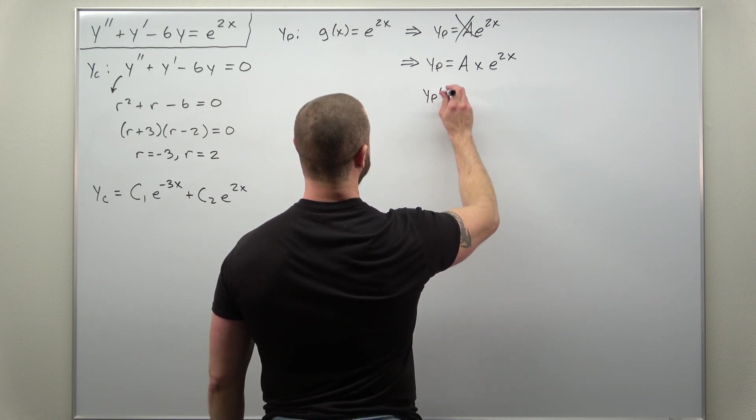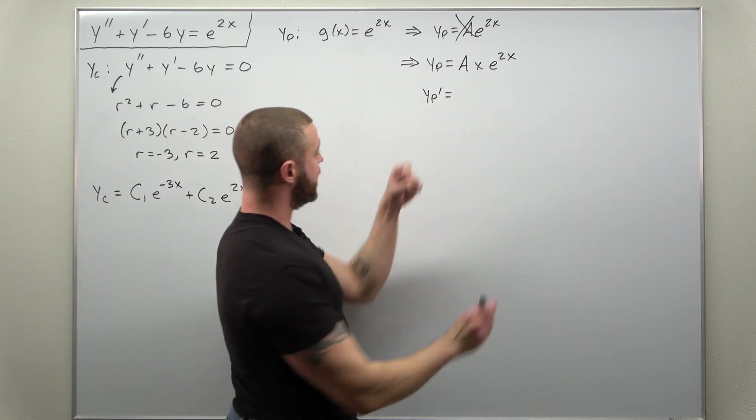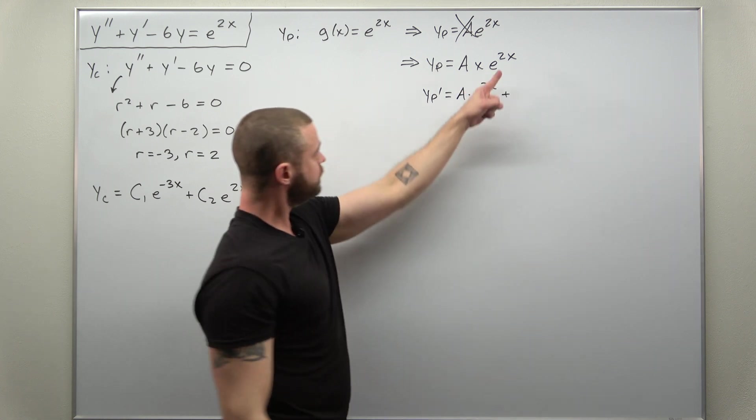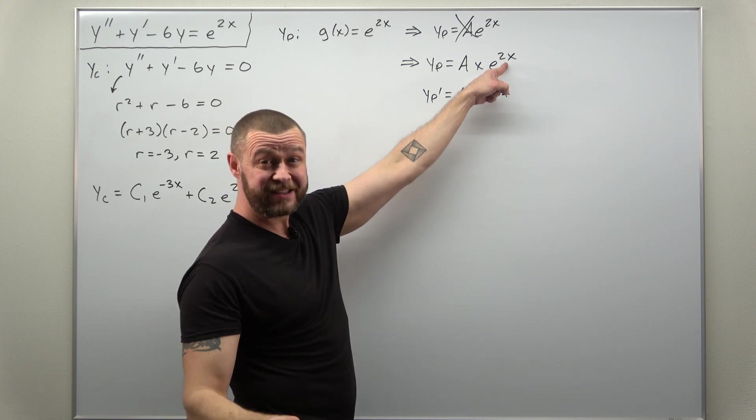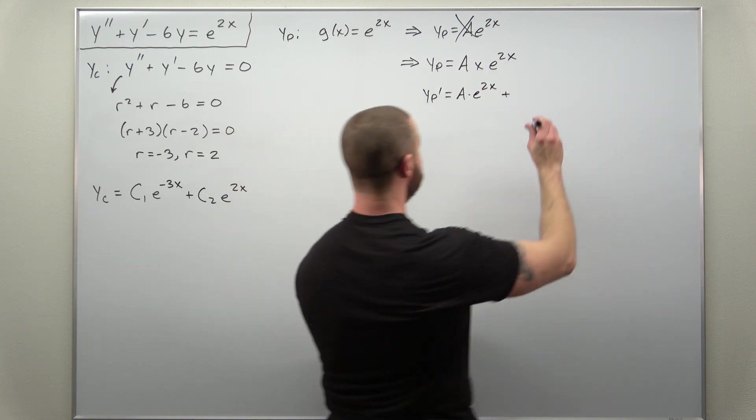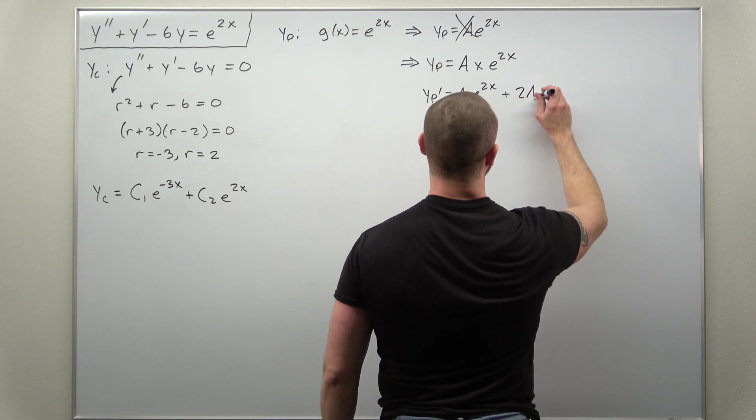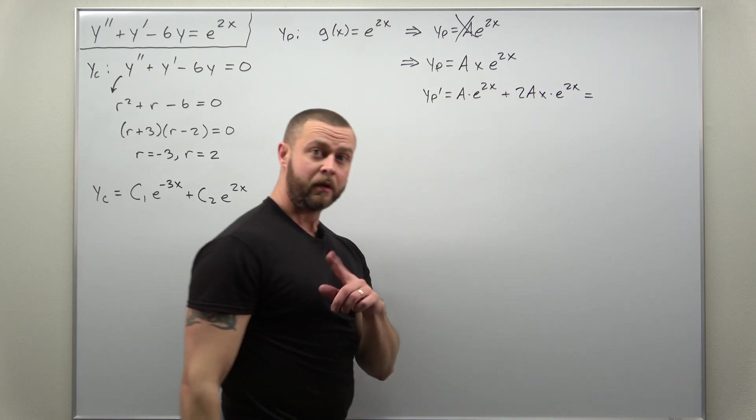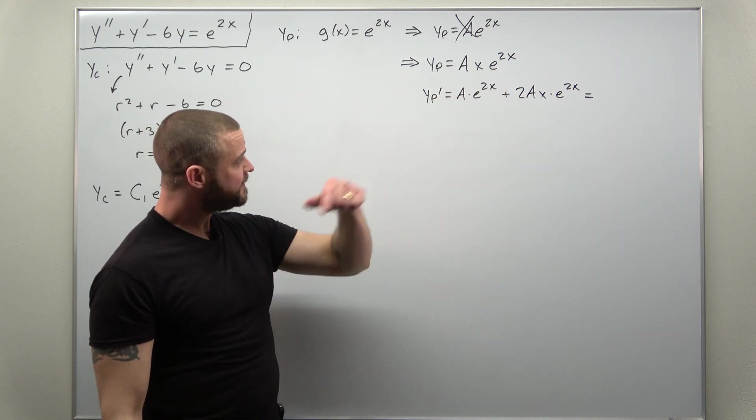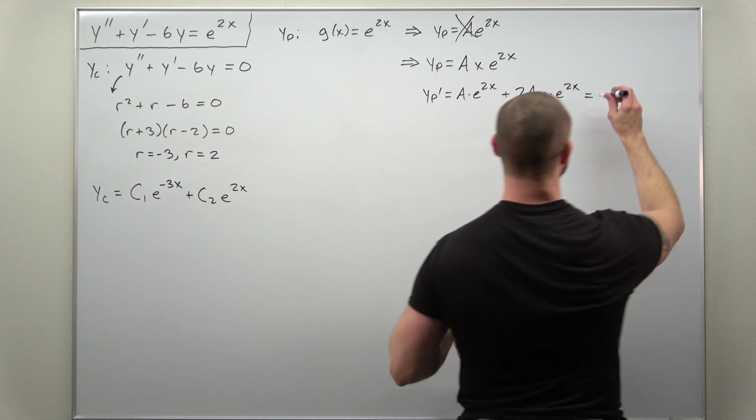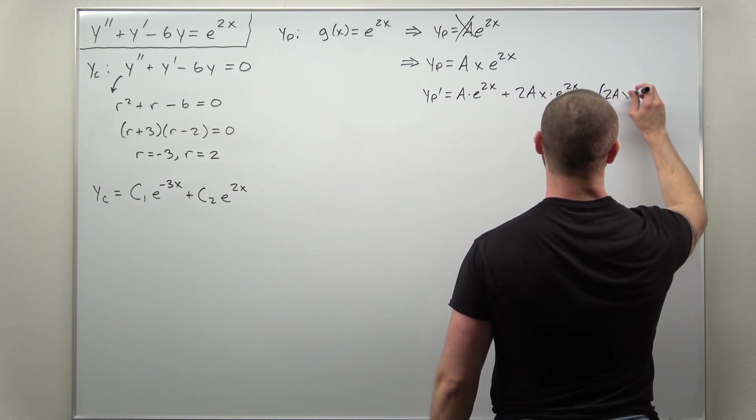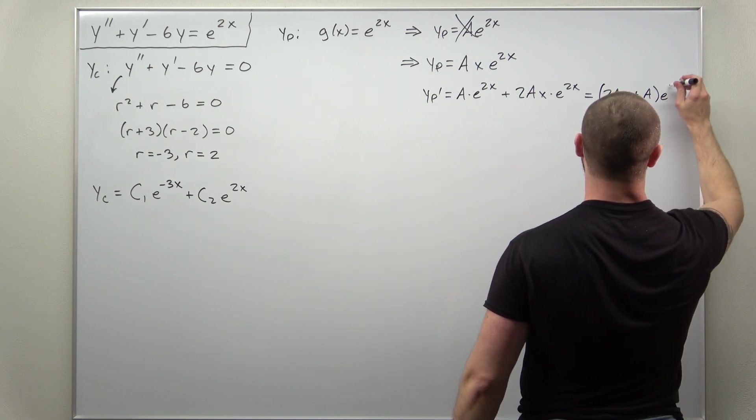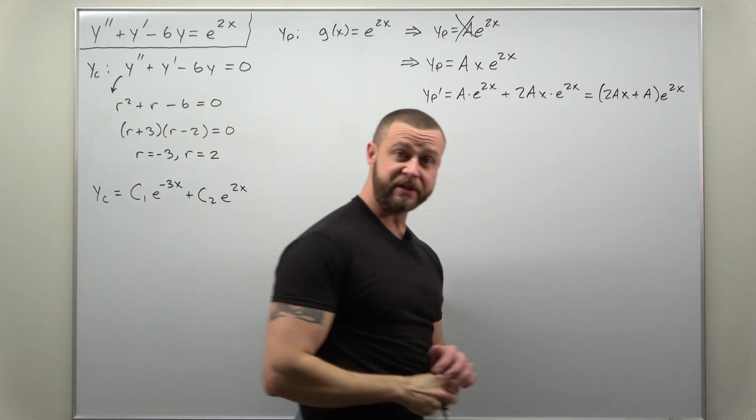So let's find the first derivative, apply the product rule. We'll get A times e^(2x) plus Ax times e^(2x). And when you differentiate e^(2x), you'll get a factor of 2. And it looks like I can clean that up a little bit. I can factor out the exponential terms and write this as (2Ax + A)e^(2x).